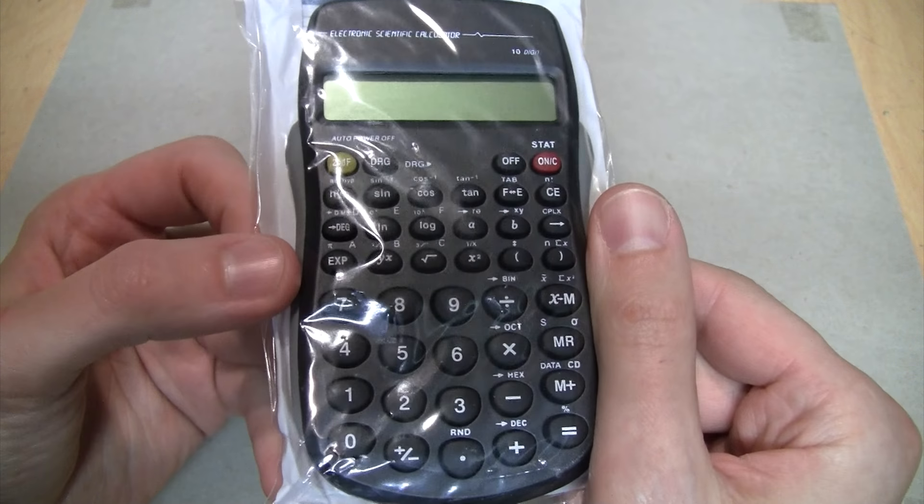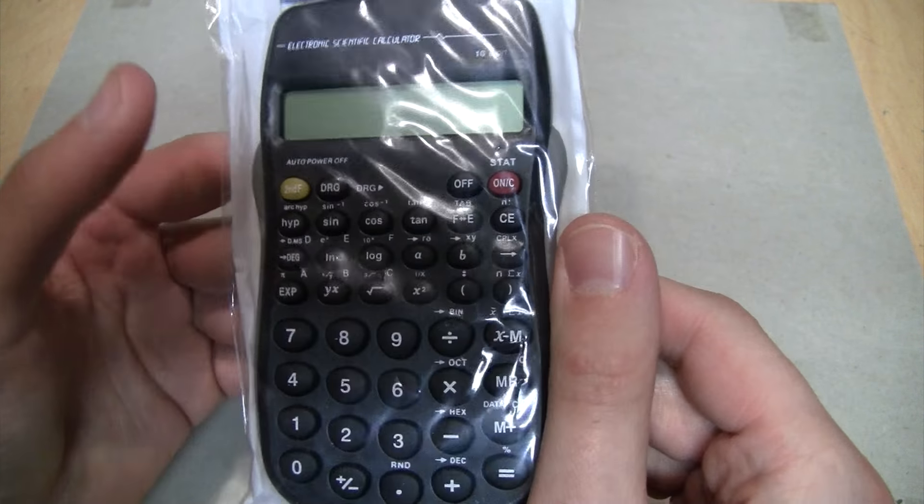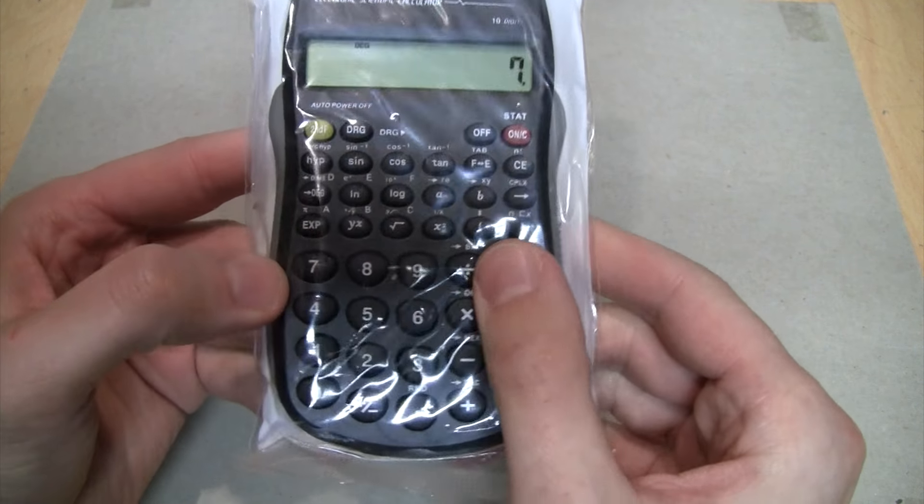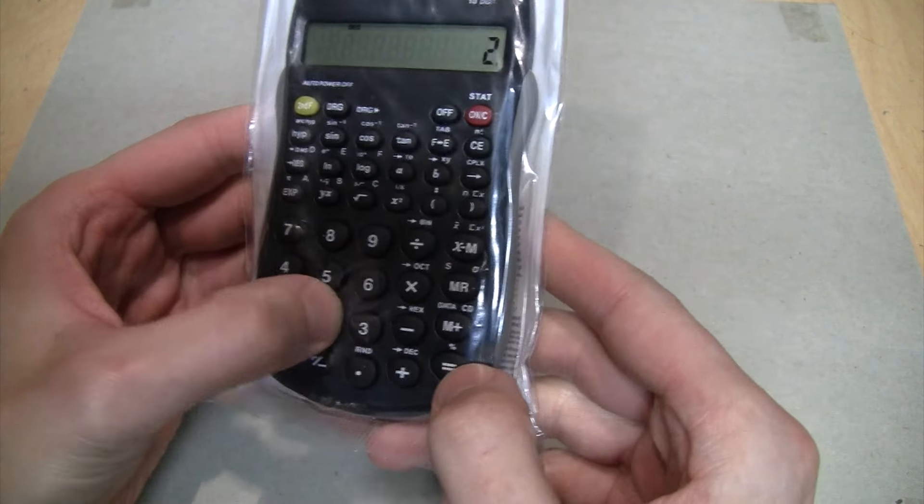It's a one dollar scientific calculator in a plastic bag. I was shopping at Dollar Tree recently and I noticed they're selling these scientific calculators under their Jot brand for one dollar. Because this is in such a thin plastic bag and it comes with a battery, there's nothing stopping you from just using it in the bag.